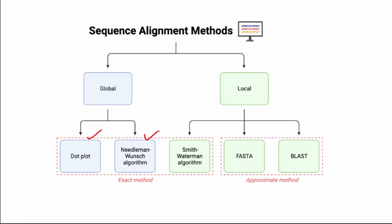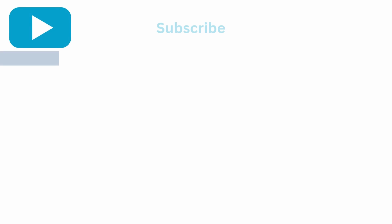For global alignment we also have the Needleman-Wunsch algorithm. For local alignment we have the Smith-Waterman algorithm, FASTA, and BLAST algorithms. Dot plot, Needleman-Wunsch, and Smith-Waterman are generally for pairwise alignment, whereas for multiple sequence alignment we have FASTA, BLAST, and other algorithms like MUSCLE and ClustalW.